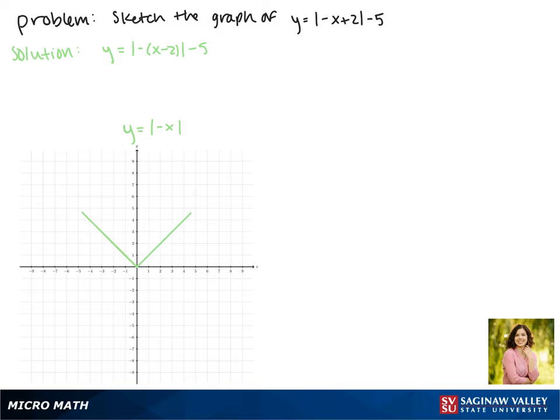Since we're taking the absolute value of a negative x, this reflects our graph across the y-axis, but since this is symmetric across the y-axis, that doesn't change it.